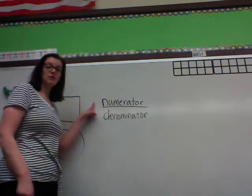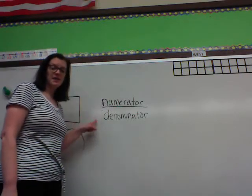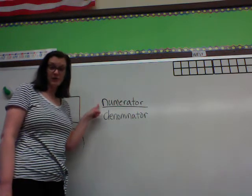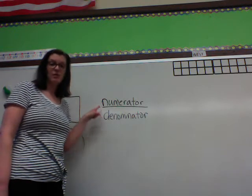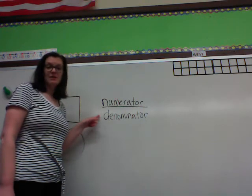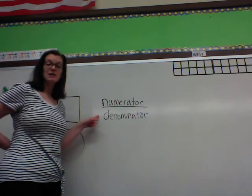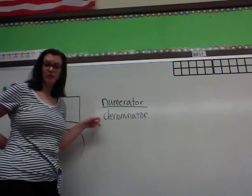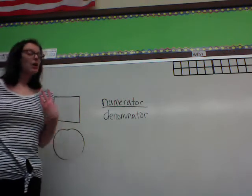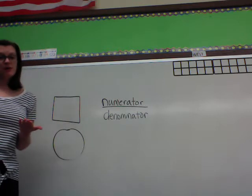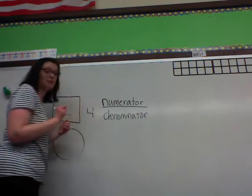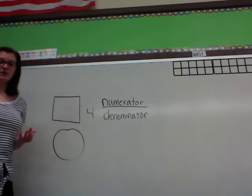Let's see if we can remember. We have our words numerator and denominator. Numerator means the part of the shape that is shaded — so how many pieces are shaded or covered. Denominator means how many pieces the shape is cut into. Since today we're learning about cutting it into fours, our bottom number is going to be four, because that's how many pieces our shape is going to be cut into.